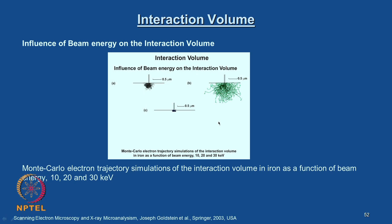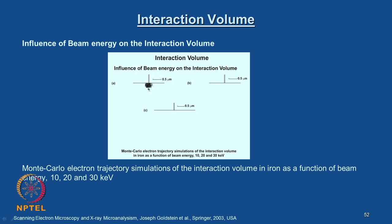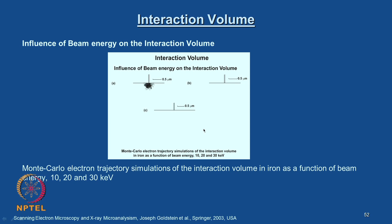We also discussed the influence of beam energy on the interaction volume. This is another Monte Carlo electron trajectory simulation for iron as a function of beam energy — 10, 20, and 30 kiloelectron volts. You can see that at low kV the interaction volume is small, and as the beam energy increases, the electron trajectories spread wider and wider inside the material. So beam energy also controls the interaction volume of the specimen and electron beam.